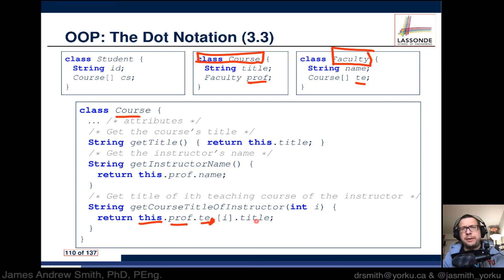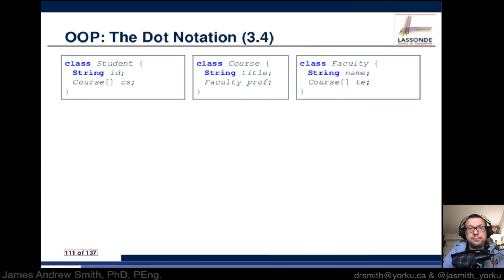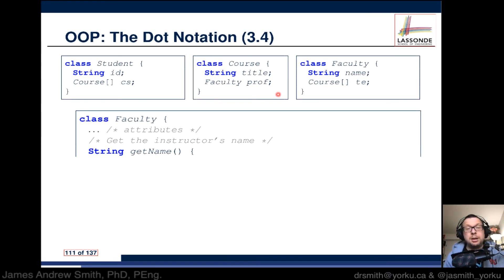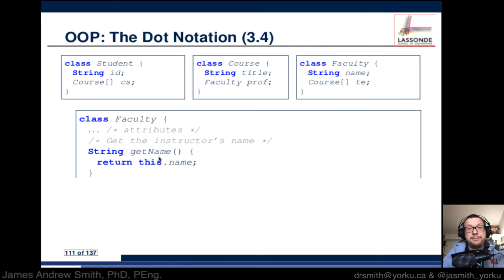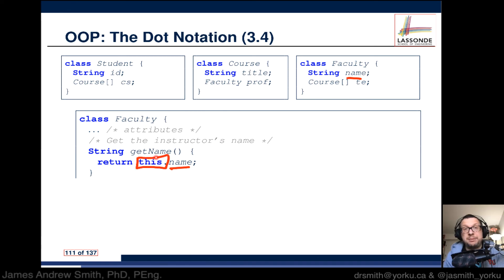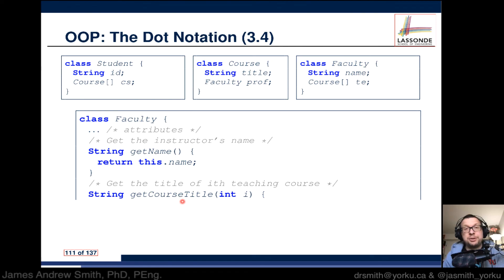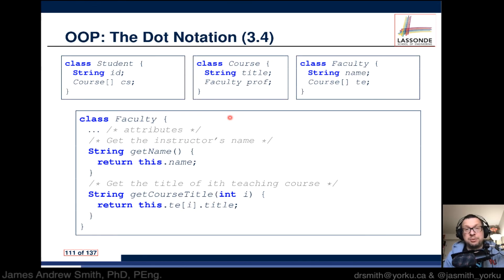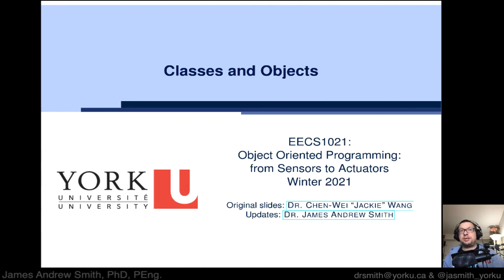Then we get the title for it. Next, for the Faculty class, we have a method getName — we return the name associated with that faculty member: this.name. We can get the professor's course title by passing in an integer i. We return this.te[i].title — te is the array of courses, i is the index, and title is the attribute — and there you have it: dot notation.